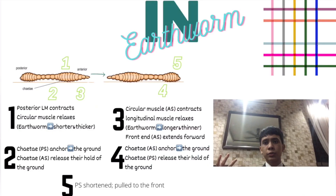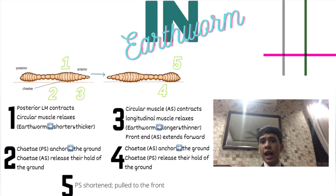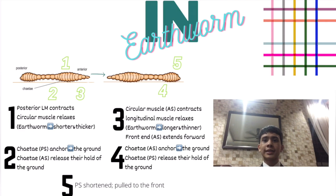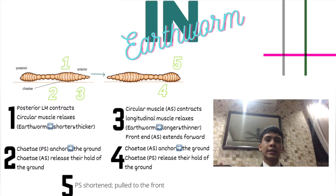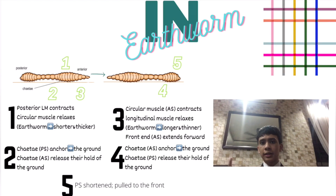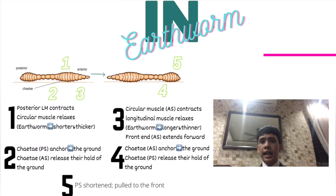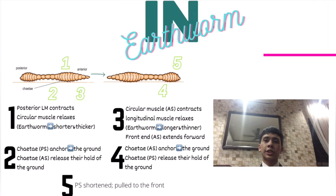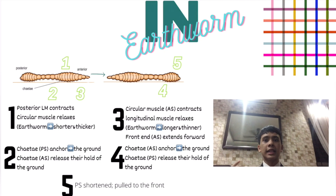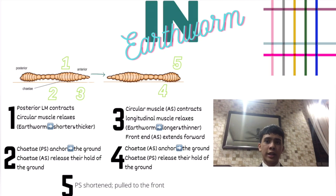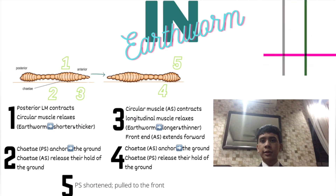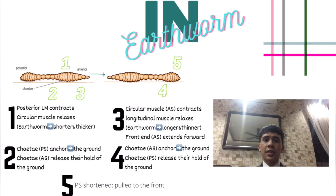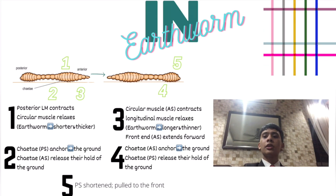Next is the creeping movement in earthworms. Firstly, the posterior longitudinal muscle contracts and the circular muscle relaxes; the earthworm becomes shorter and thicker. Second, the setae at the posterior segment anchor to the ground while the setae at the anterior segment release their hold. Third, the circular muscle at the anterior segment contracts and the longitudinal muscle relaxes, so the earthworm becomes longer and thinner.